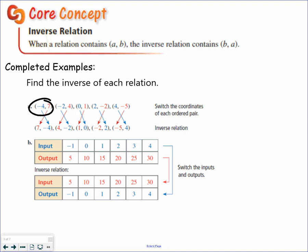Notice negative 4, 7. The inverse is 7, negative 4. 4, negative 5. The inverse is negative 5, 4. So again, you are switching the inputs and the outputs. So a comma b is the same as b comma a in the inverse. So this is an inverse relation.